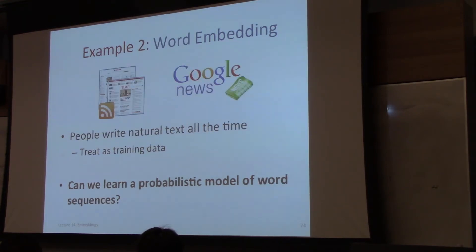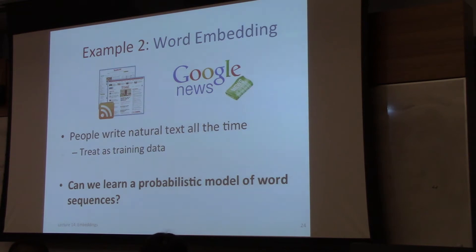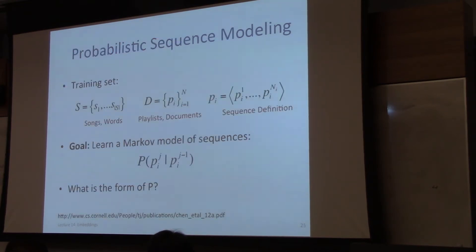Another example is words. People write text all the time. Natural text can be thought of as sequences of words — a sentence is a sequence of words. We want to learn a probabilistic model of word sequences given a large body of text that people have written. This is the idea of probabilistic sequence modeling.